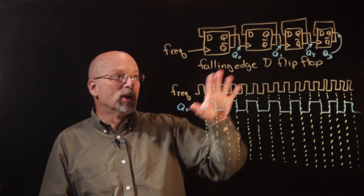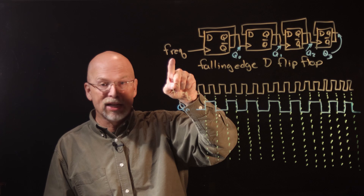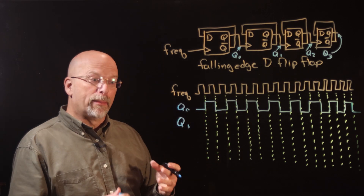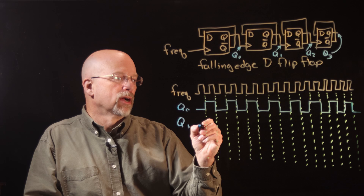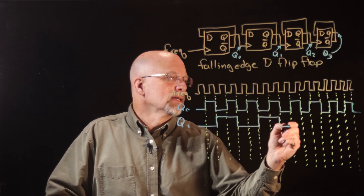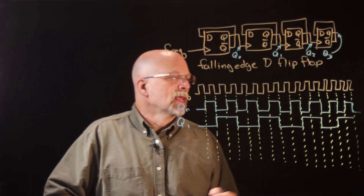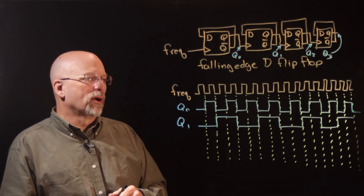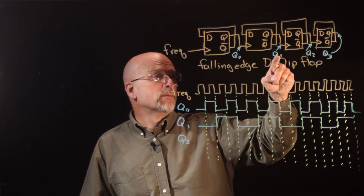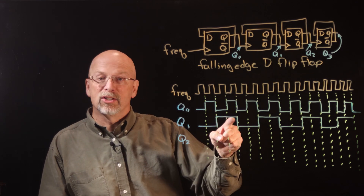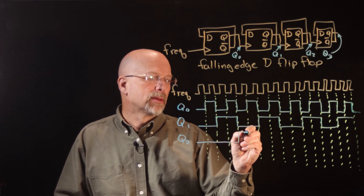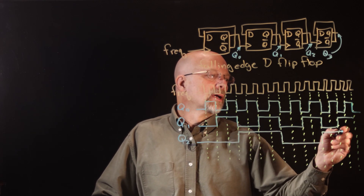What does Q1 look like? Q1 is not driven by frequency — it's driven by Q-naught. So every time Q-naught goes from a one to a zero, we're going to flip Q1. We've got a one-to-zero transition there, so we flip it. We've got a one-to-zero transition there, so we flip it. We just keep flipping this back and forth every time we get a one-to-zero transition of Q-naught. What does Q2 look like? Q2 is driven by Q1, and so every time Q1 does a one-to-zero transition, Q2 is going to flip — starting with Q2 as a zero, then it'll flip, and flip, and flip, and flip.